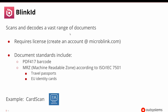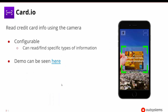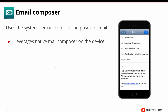BlinkID knows how to scan and decode lots of different types of documents. This requires a license that you need to obtain from Microblink, but it will then scan certain types of barcodes, your passport, and identity cards — so it's a fairly useful plugin to have. Similarly, there's CardIO that can scan any type of credit card information and there's a pretty cool demo out there on how that works.